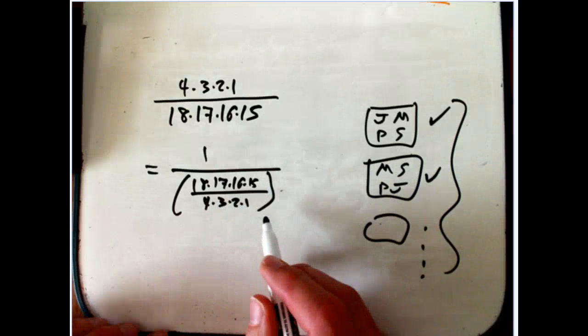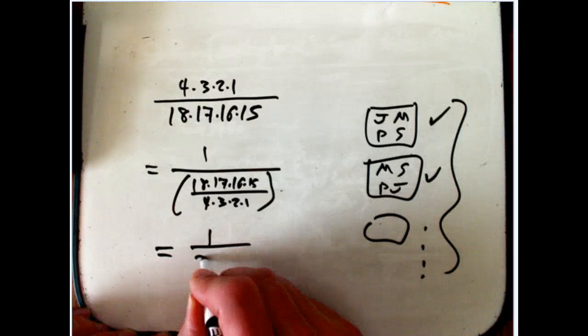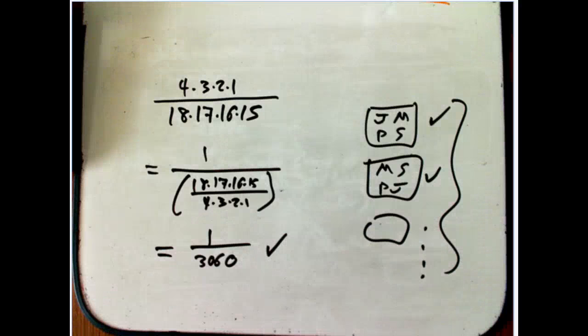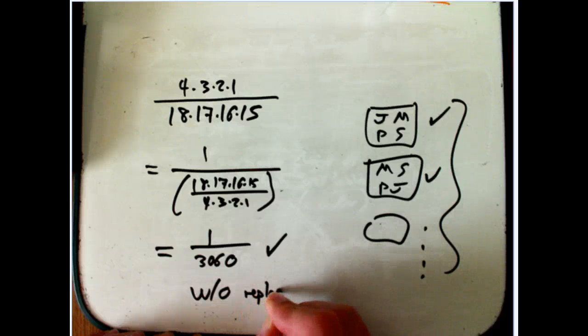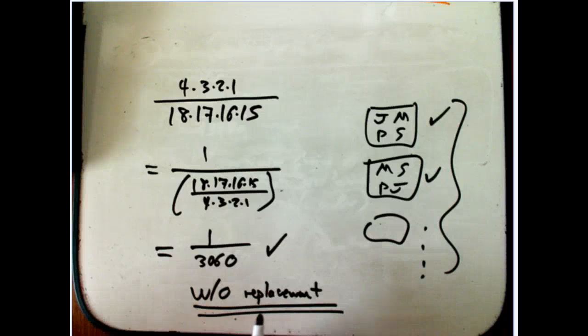So that is indeed 1 over 3060. So it really does work to do it in either way here. And the key is it's without replacement. And we'll talk about if you're doing with replacement, why you have to make sure you count with order even if you don't think you care about that.